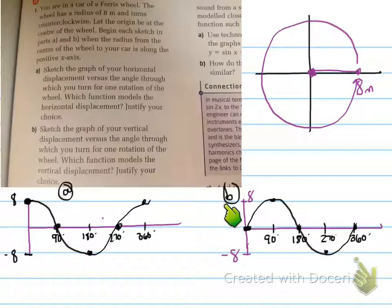Next part B says sketch the graph of your vertical displacement. So here we start at 0, our height reaches up to 8, then it starts to go downwards towards 0, then our height goes towards negative 8, and then it comes back to 0 again.